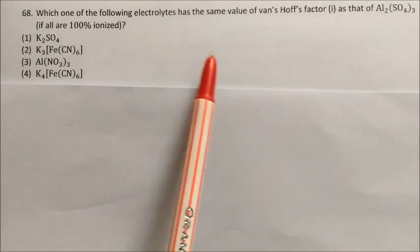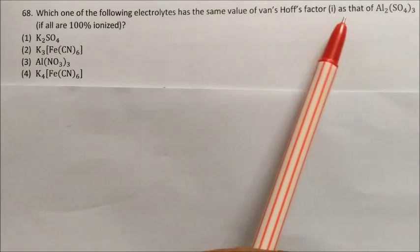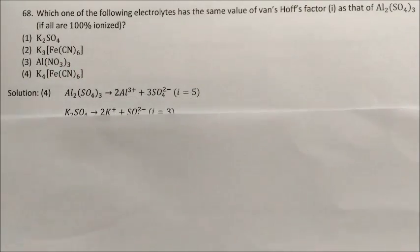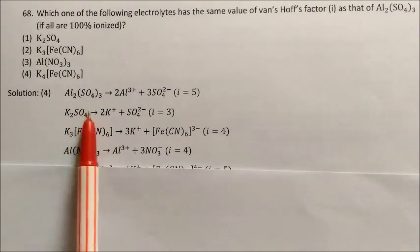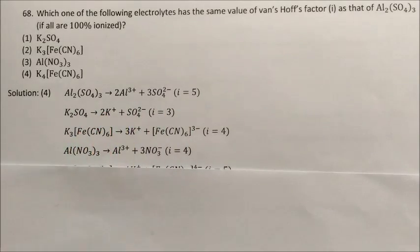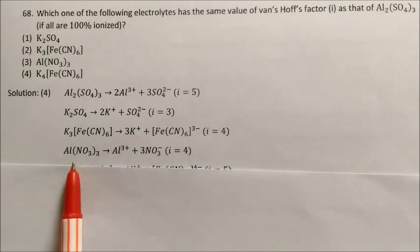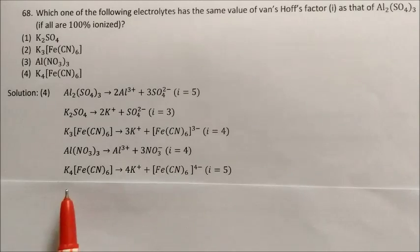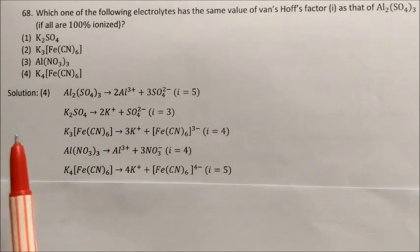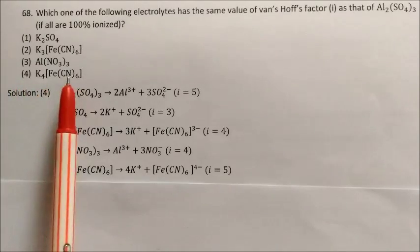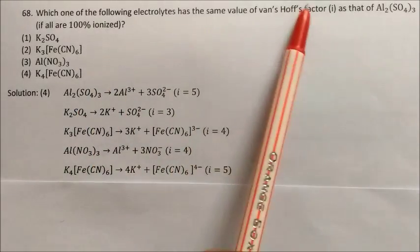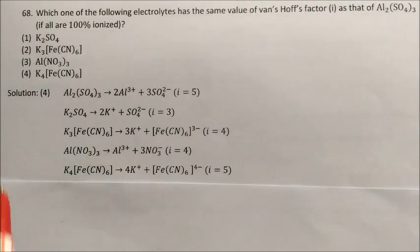Question: Which electrolyte has the same van't Hoff factor i as aluminium sulfate Al2(SO4)3? Al2(SO4)3 gives i = 5 (2 Al3+ + 3 SO4 2−). Silver sulfate: i = 3. Potassium sulfate: i = 3. Aluminium nitrate Al(NO3)3: i = 4. K4[Fe(CN)6]: i = 5 (4 K+ + [Fe(CN)6]4−). So K4[Fe(CN)6] has the same i value as Al2(SO4)3. Answer: option 4.